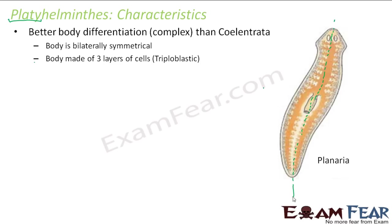There is no internal body cavity — that is, they are acoelomate. The coelom is absent in Platyhelminths, so there is no cavity between the body wall and the gut wall. Almost around 13,000 species exist. These animals are generally soft-bodied — not very hard or tough as far as their body is concerned.